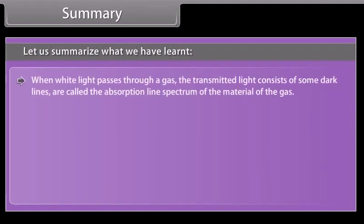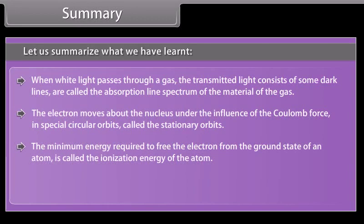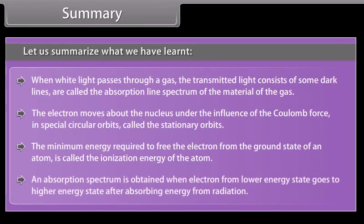When white light passes through a gas, the transmitted light consists of some dark lines called the absorption line spectrum of the material of the gas. The electron moves about the nucleus under the influence of the Coulomb force in special circular orbits called the stationary orbits. The minimum energy required to free the electron from the ground state of an atom is called the ionization energy of the atom. An absorption spectrum is obtained when electron from lower energy state goes to higher energy state after absorbing energy from radiation.